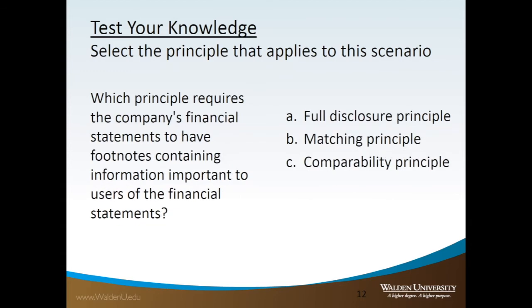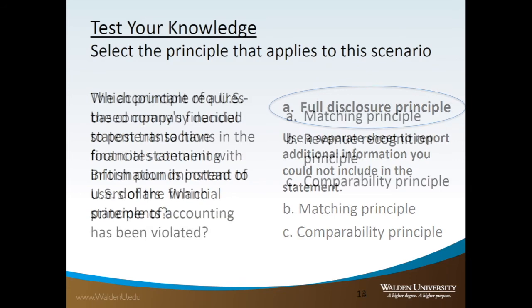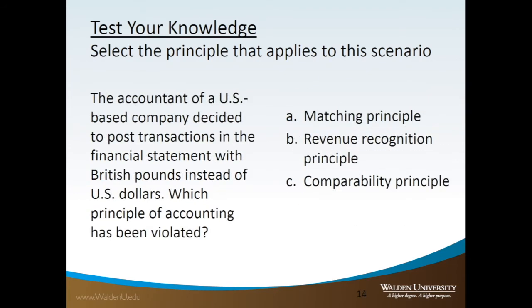Which principle requires the company's financial statements to have footnotes containing information important to users of the financial statements? A) Full Disclosure Principle, B) Matching Principle, C) Comparability Principle. The answer is A — Full Disclosure Principle. The accountant of a US-based company decided to post transactions in the financial statement with British pounds instead of US dollars. Which principle of accounting has been violated? The answer is C — Comparability Principle.